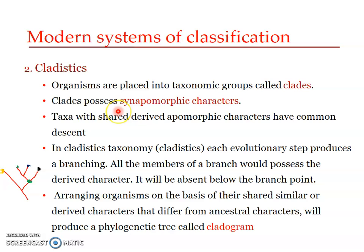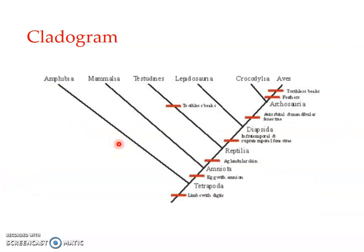Clades usually have synapomorphic characters. Taxa with shared derived apomorphic characters — that is, synapomorphic characters — have common descent. So taxa having the synapomorphic character have arisen from a common ancestor.